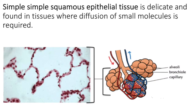Simple squamous epithelial tissue is a single layer of flat cells. It's very delicate tissue, and its function is to facilitate the diffusion of small molecules. We find simple squamous epithelial tissue in the air sacs — the alveoli, which are the air sacs in your lungs. It's across the wall of the alveolus that oxygen diffuses into your body and CO2 diffuses out.